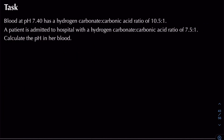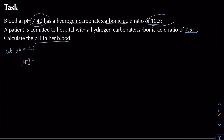A more challenging question requires us to calculate Ka from given information and then use it to find a patient's blood pH. We're told blood at pH 7.4 has a hydrogen carbonate to carbonic acid ratio of 10.5 : 1, and a patient is admitted with a ratio of 7.5 : 1. First, calculate [H+] at pH 7.4: [H+] = 10^(−7.4) = 3.98 × 10⁻⁸ mol dm⁻³.